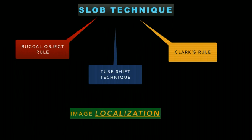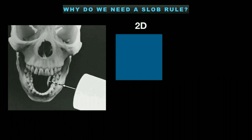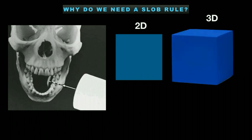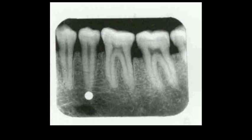Before we move on, let us understand why the SLOB rule is important. An x-ray is a two-dimensional representation of a three-dimensional anatomy. Since an x-ray is taken perpendicular to the buccal surfaces of the tooth, only the mesiodistal aspect is visible on the x-ray, as compared to the buccal-lingual aspect. So if we have an x-ray with a superimposed structure in relation to the second premolar and want to understand whether that object is present buccally or lingually, it becomes difficult.